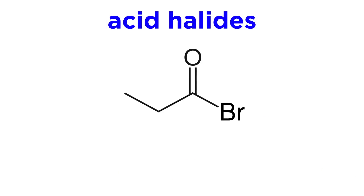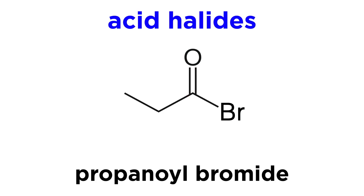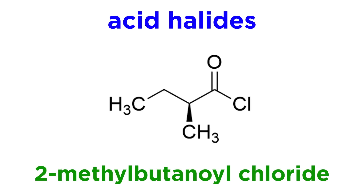Now let's take a look at acid halides. These are similar to carboxylic acids, but the OH has been replaced by a halogen, hence acid halide. These will also be named similarly to carboxylic acids, but instead of the suffix -ic, we will use -yl, and then finish things off with the name of the halide instead of the word acid. So this would be propanoyl bromide. This would be 2-methylbutanoyl chloride.